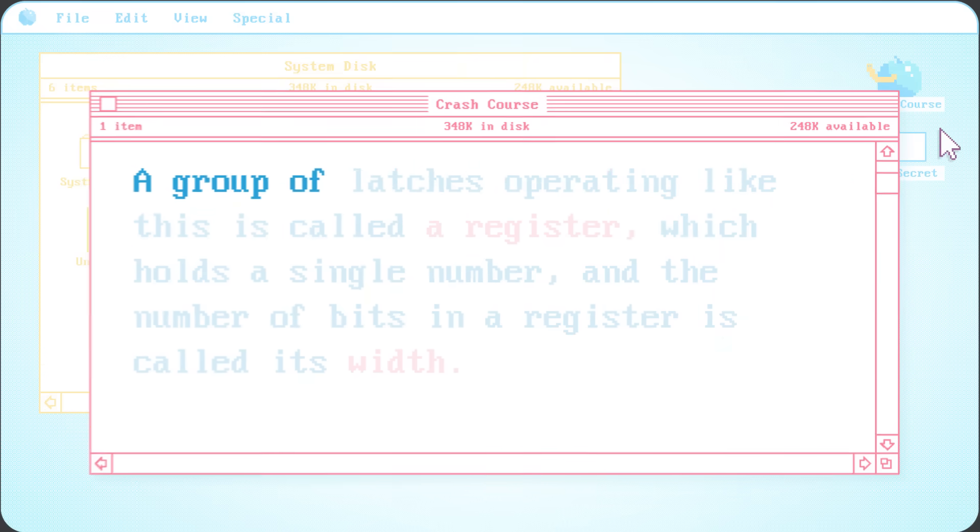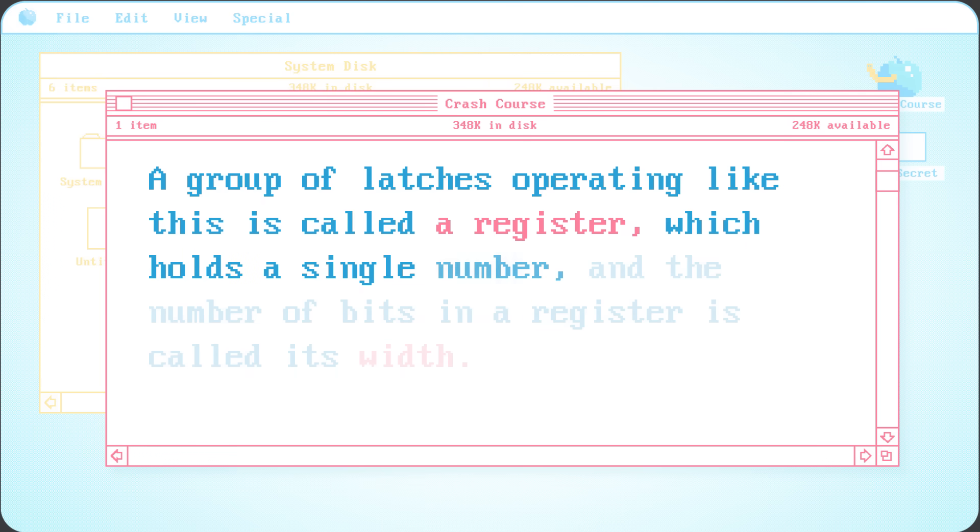Now of course, computer memory that only stores one bit of information isn't very useful. Definitely not enough to run Frogger, or anything really. But we're not limited to using only one latch. If we put 8 latches side by side, we can store 8 bits of information, like an 8-bit number. A group of latches operating like this is called a register, which holds a single number. And the number of bits in a register is called its width.